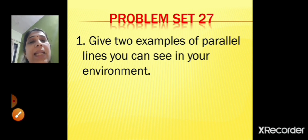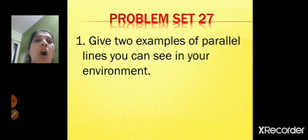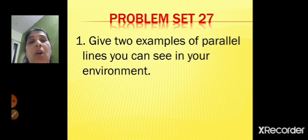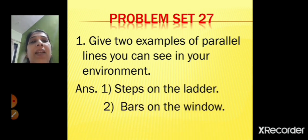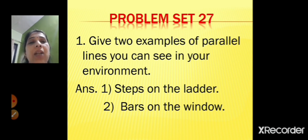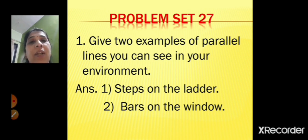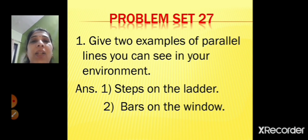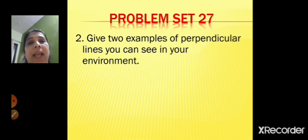Let's start with problem set 27. Give two examples of parallel lines you can see in your environment. The first example is steps on the ladder, and the second is bars on the window. The bars of the window are parallel to each other, and the steps on the ladder are also parallel to each other.